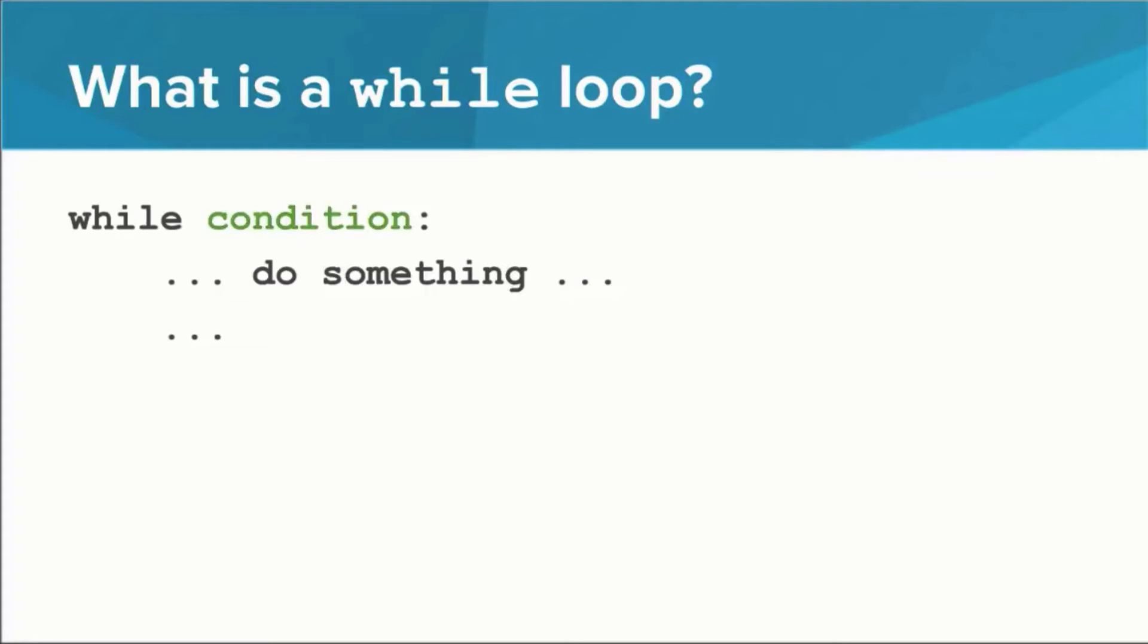The condition still has to be something that evaluates to a Boolean. The code under the while loop is the body. If the condition is true, it executes. Every time it executes, the condition is checked again. Unless the condition has become false, the body runs again. And guess what? Everything in the body of the while loop has to be indented by one level.